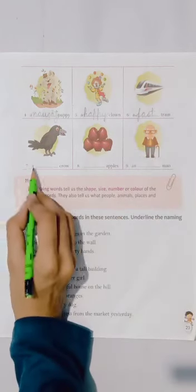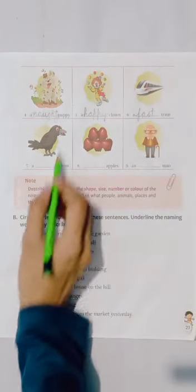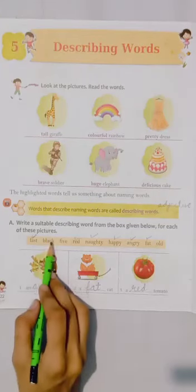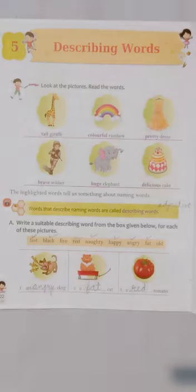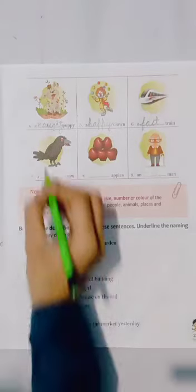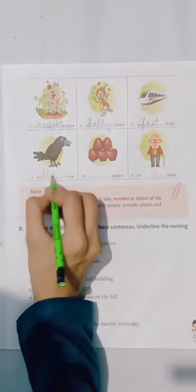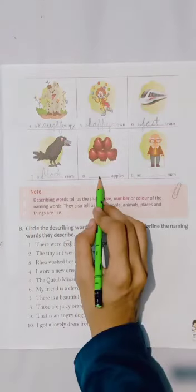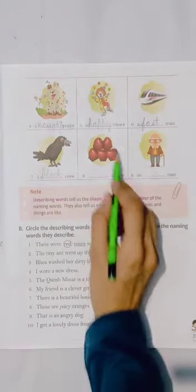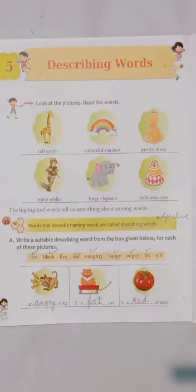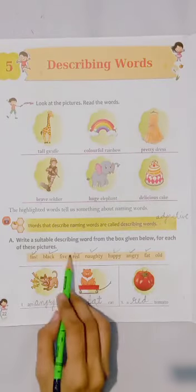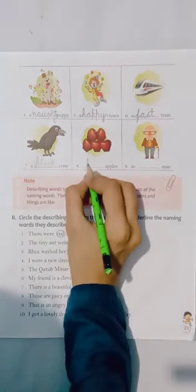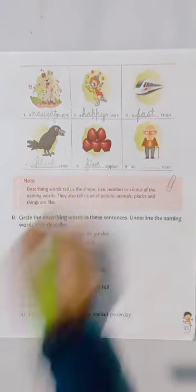Then come to the seventh part. A dash crow. See how the crow is. The crow is black. Let's write B-L-A-C-K, black. Eighth part — dash apples. See the apples carefully. Five apples. Let's write F-I-V-E, five.